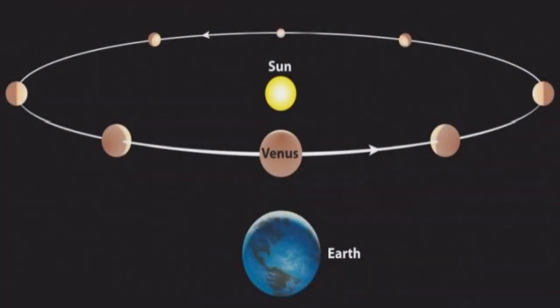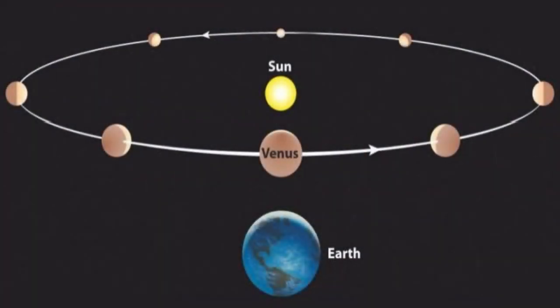So, do we ever see Venus high up overhead in the night sky? No. This is because of Venus's location closer to the sun. The same is true for Mercury, but that's another story. You can see that Venus is only ever visible when it is to the right or left of the sun.